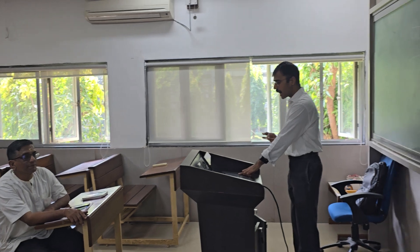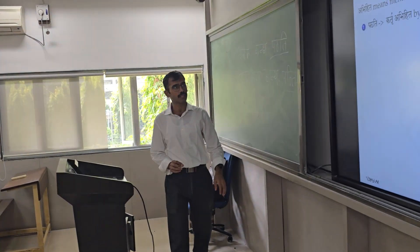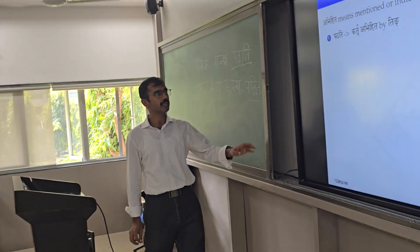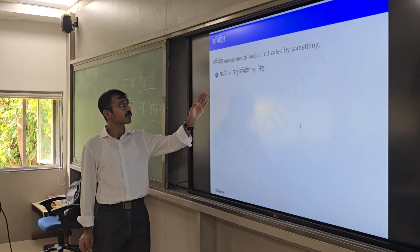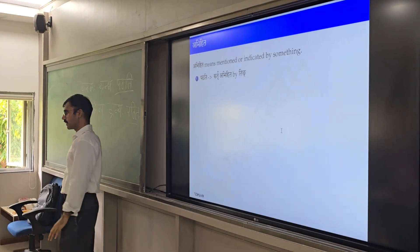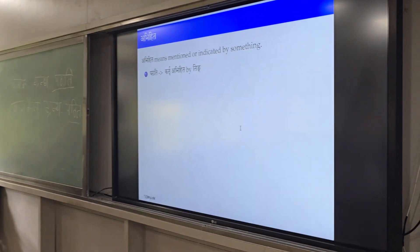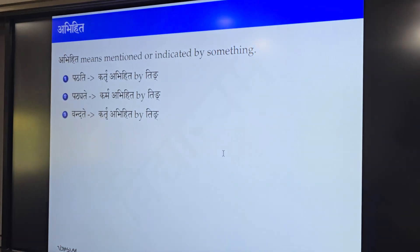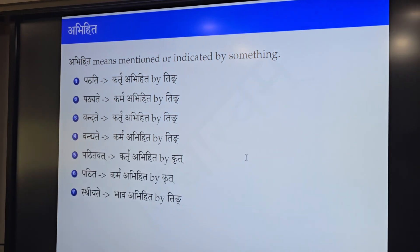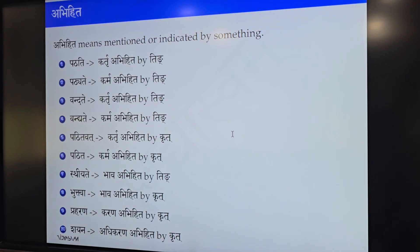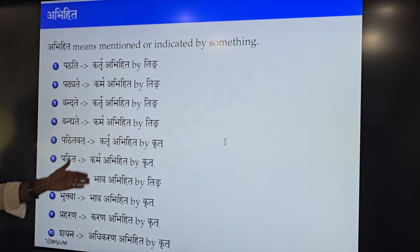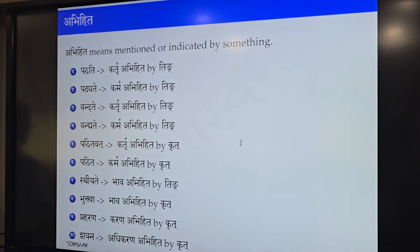So first, we will look at the karaka meaning. Abhihita means mentioned by or indicated by something. So 'patati' is kartru abhihita by ting. Some forms are ting, some are krut — that is okay.